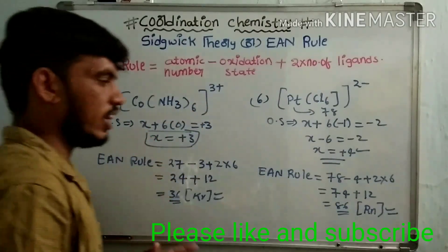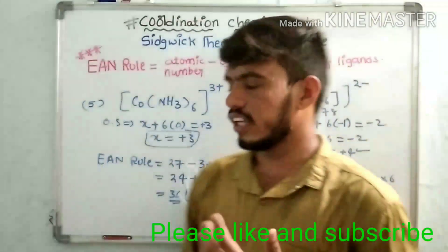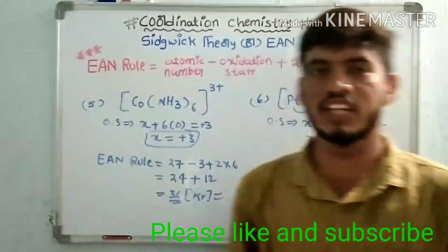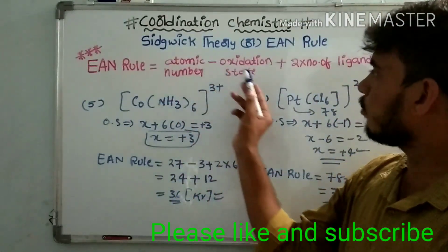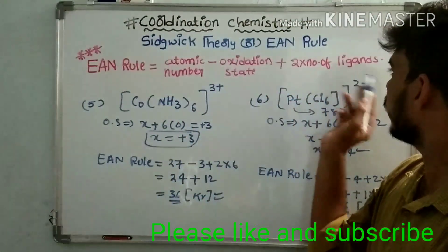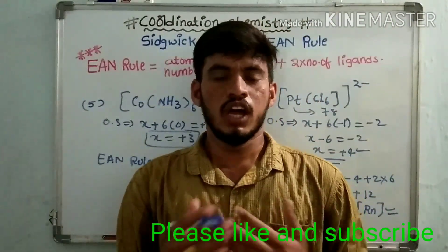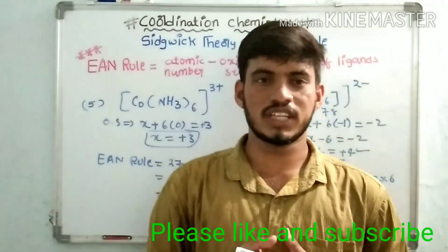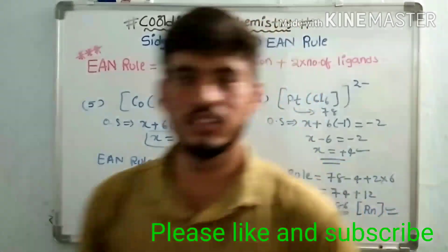These are the EAN rule calculations for metal complexes. In any metal complex, EAN equals atomic number minus oxidation state plus two times the number of ligands. If you like this video, please subscribe to my channel. Thank you very much.